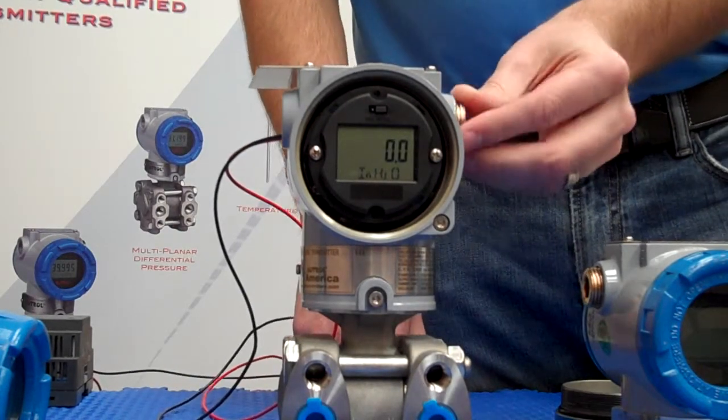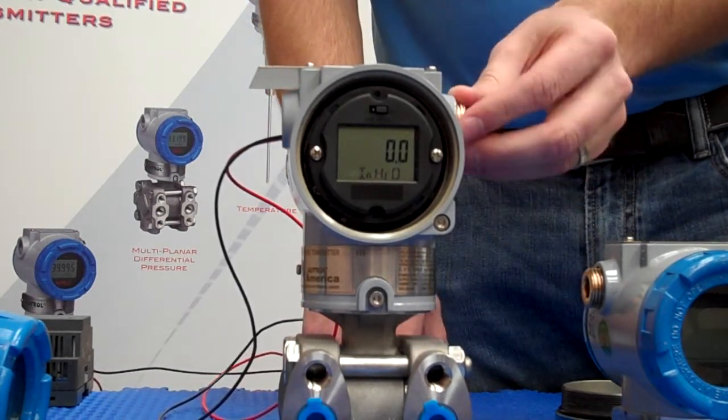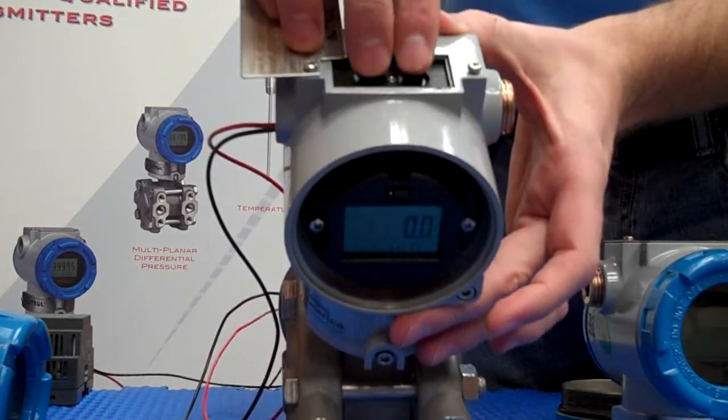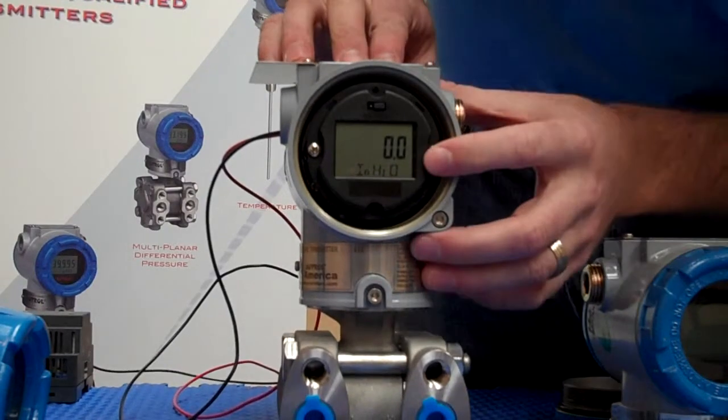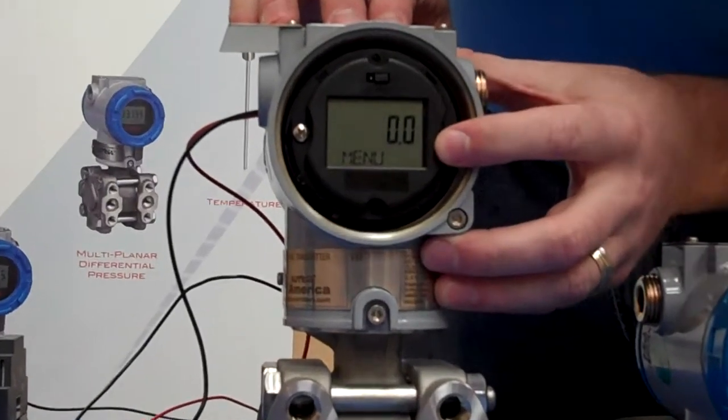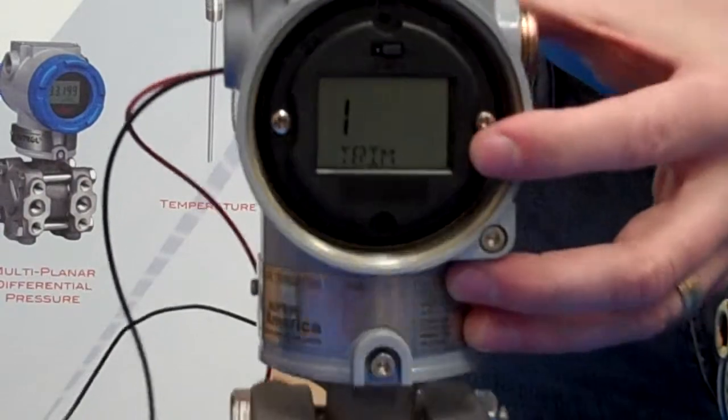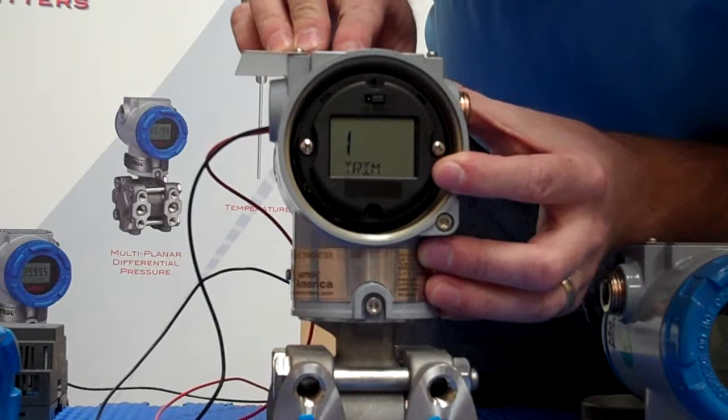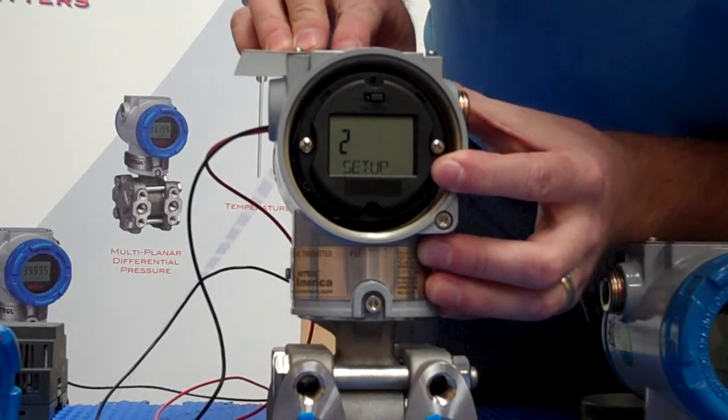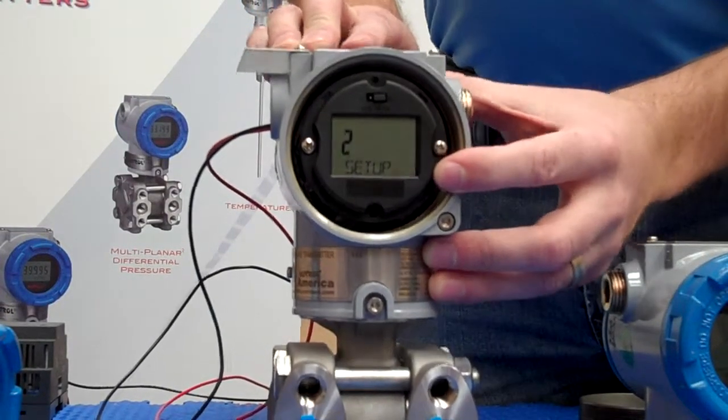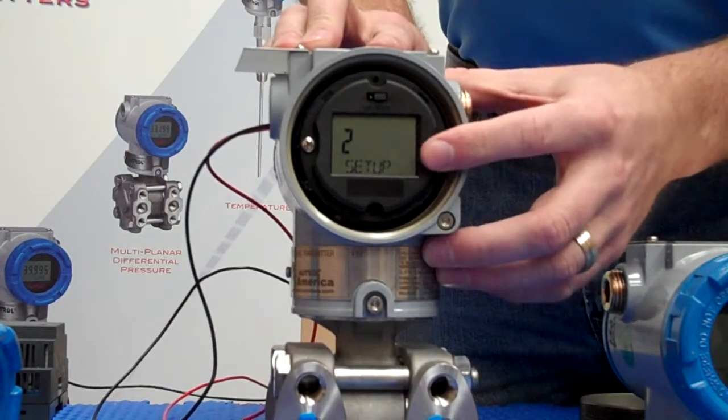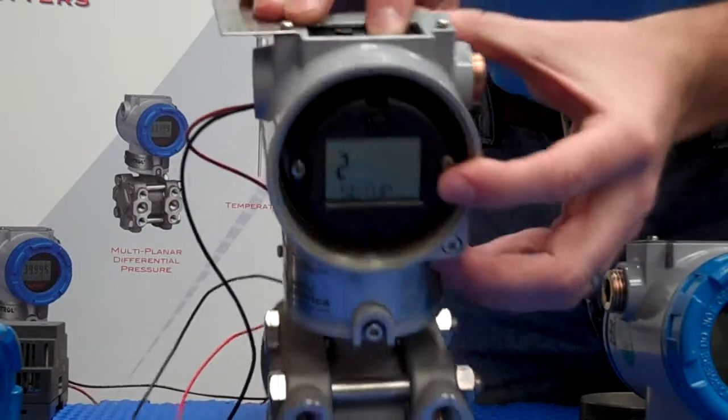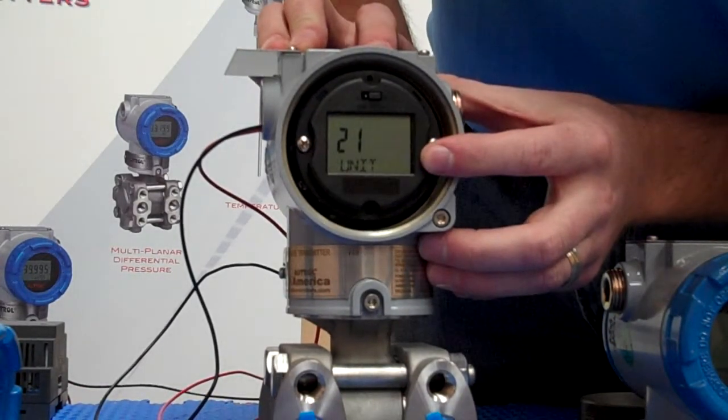We're going to simulate today making a change to our upper range using the push-button interface. First, we'll push both buttons to access the menus. Push, wait for the change, and let go. To go down, we're going to use the zero button. So we'll go down, wait for the change, and release. To access the upper range in the setup menu, we're going to use the span button to go into it. So we push and hold span, wait for a change on the display, and release.